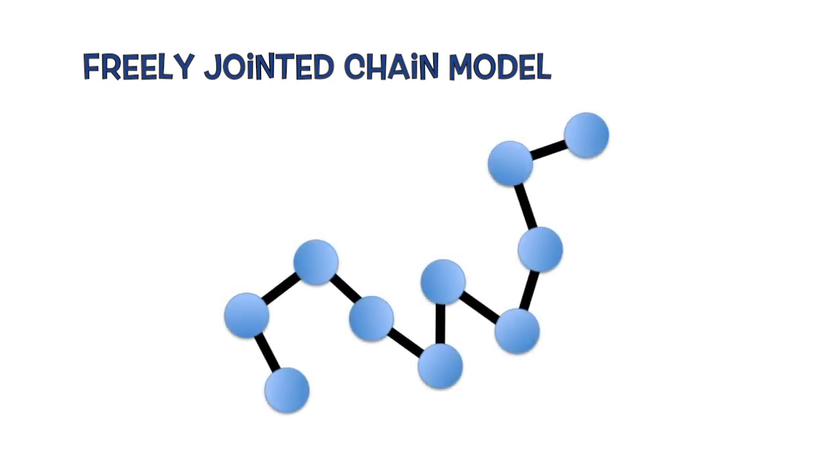So how are polymers able to achieve this level of flexibility and extensibility? To understand this, we will think about polymers using what's called the freely jointed chain model. This model assumes that the polymer is like a long chain of beads and the links holding the beads together can take on any angle they like.